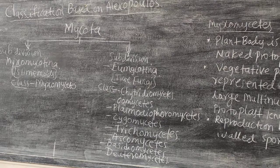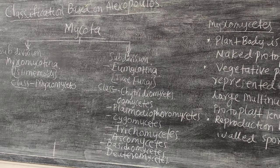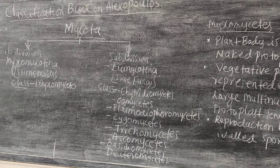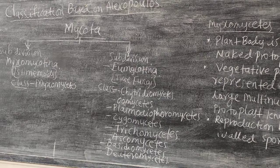The first subdivision, Myxomycotina, includes slime molds. Slime molds are naked plant bodies — the protoplast is without any cell wall, so the protoplast is naked. Such forms are called slime molds and are all put under the subdivision Myxomycotina.